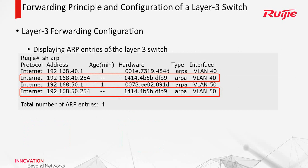For the layer 3 switch, besides the MAC address table, it also has the ARP table. Do you remember — we can use 'show ARP' to check it.